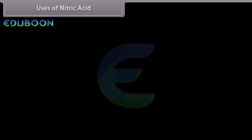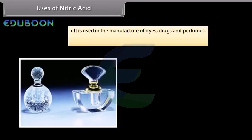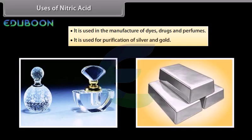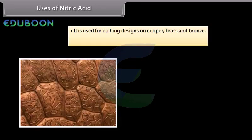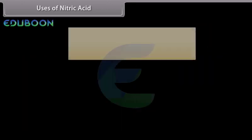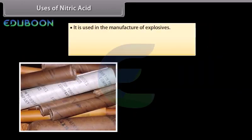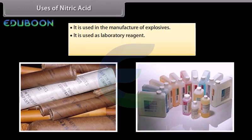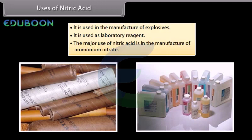The important uses of nitric acid are: in the manufacture of dyes, drugs and perfumes; for purification of silver and gold; for etching designs on copper, brass and bronze; as an oxidizer in rocket fuels; in the manufacture of explosives; as a laboratory reagent; and the major use is in the manufacture of ammonium nitrate.